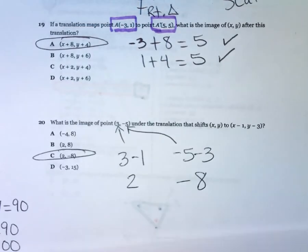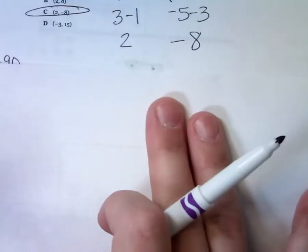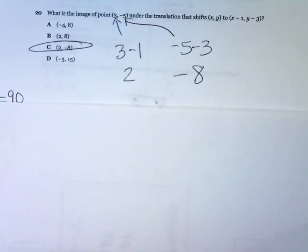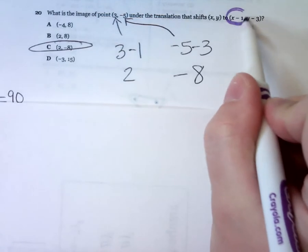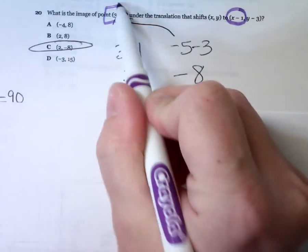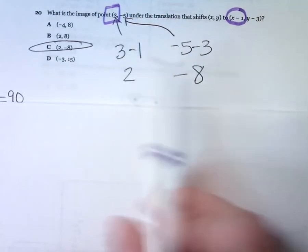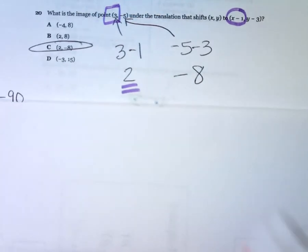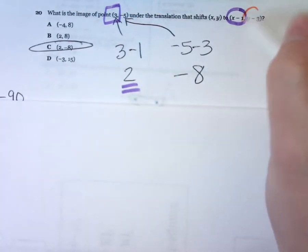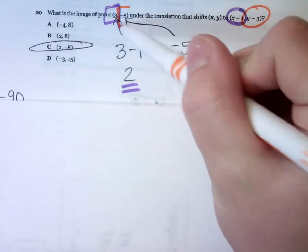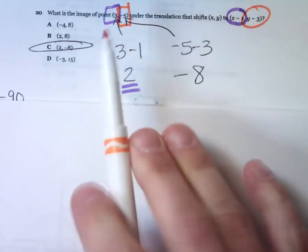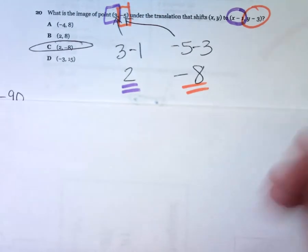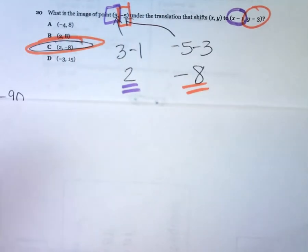Number 20. This is another translation. It tells you to take your x coordinate and subtract 1. So I took my x coordinate of 3, subtracted 1, which gave me a 2. And then it told me to take my y coordinate and subtract 3. I took my y coordinate, negative 5, and subtracted 3, which gave me negative 8. And that gave me answer choice C.